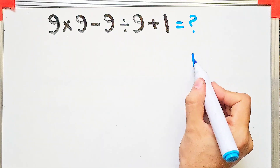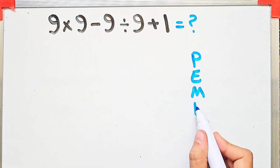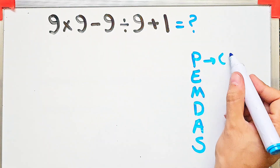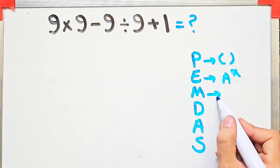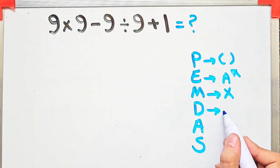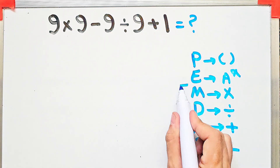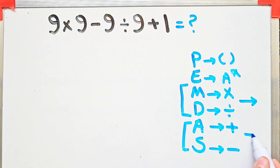To solve this question we need to follow the order of operations, which is PEMDAS. PEMDAS shows the priority of mathematical operations. P stands for parentheses, E stands for exponent, M stands for multiplication, D stands for division, A stands for addition, and S stands for subtraction. Multiplication and division have the same level of priority, and addition and subtraction also have the same priority.